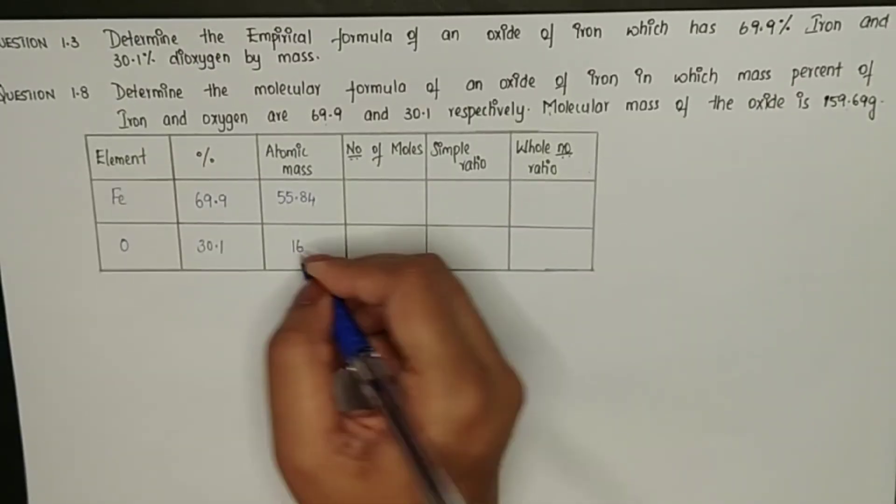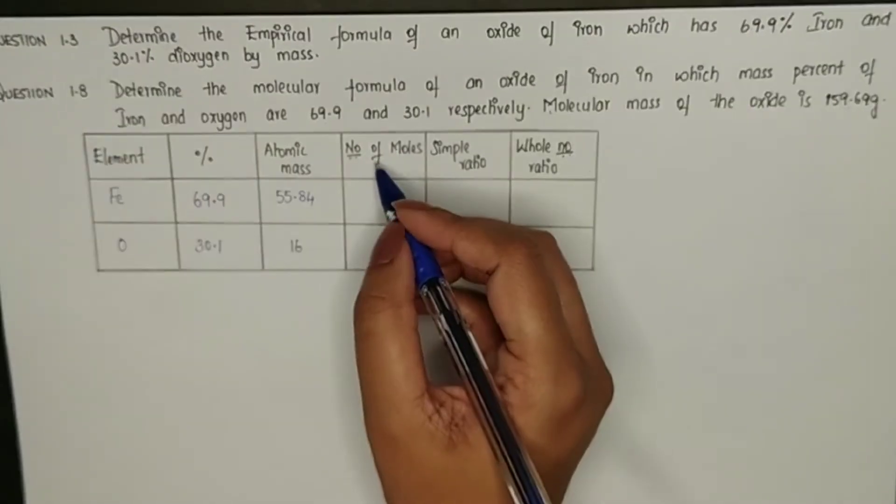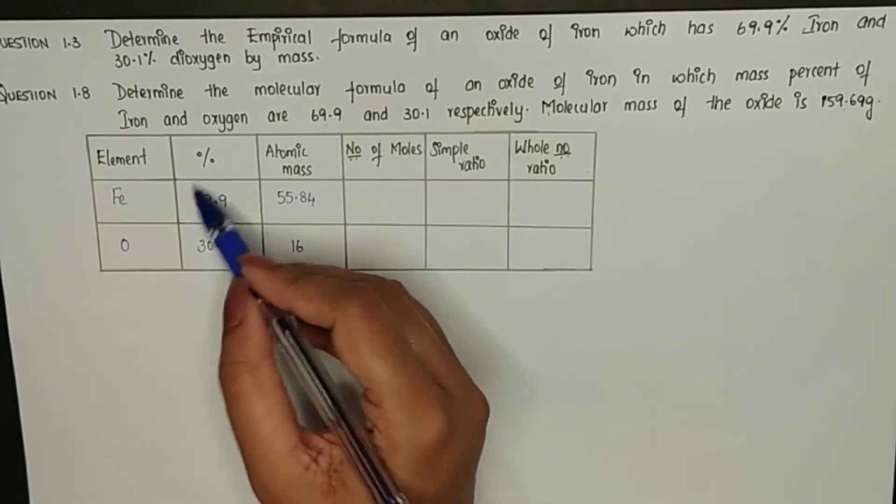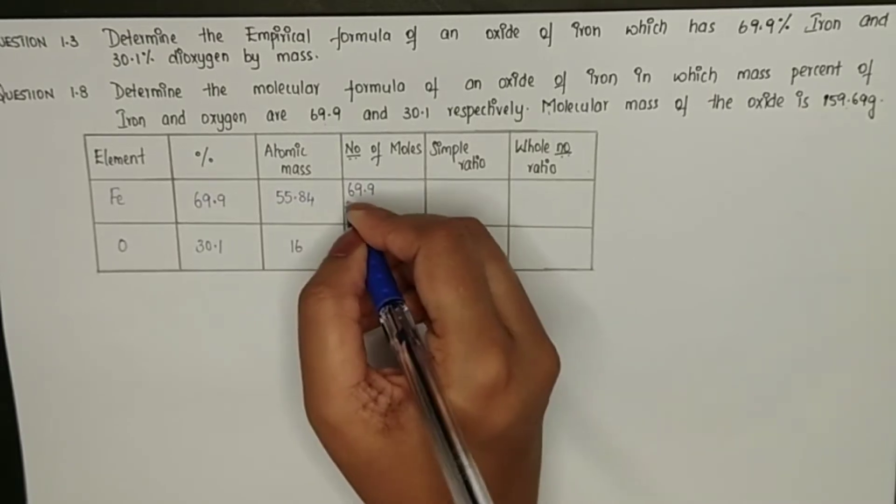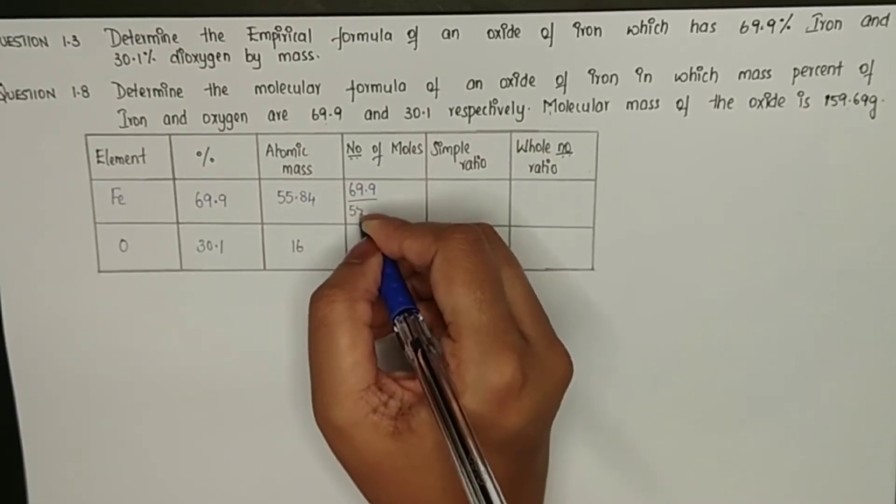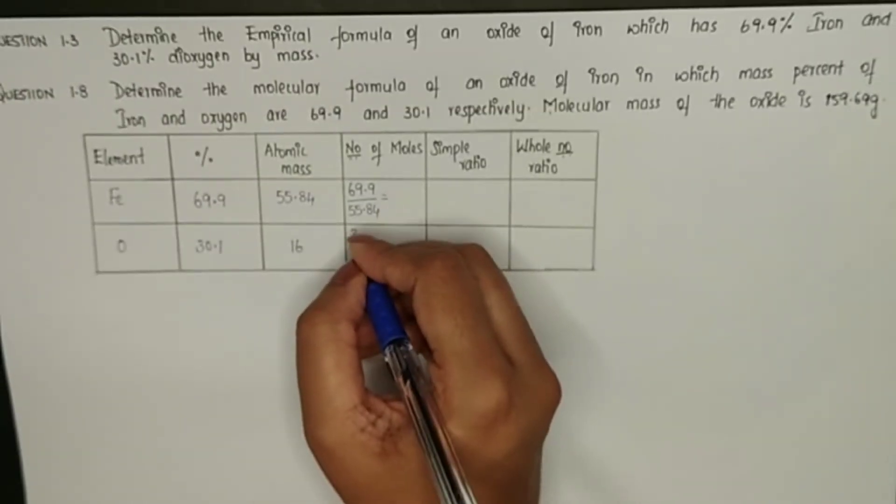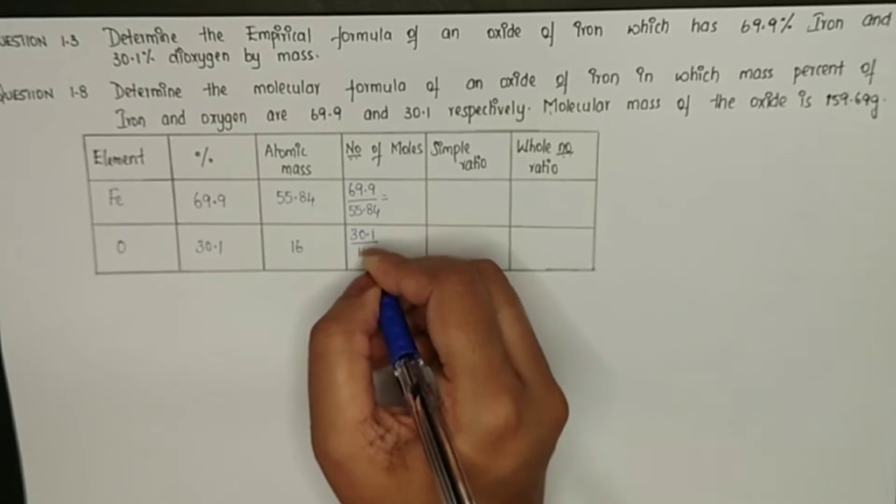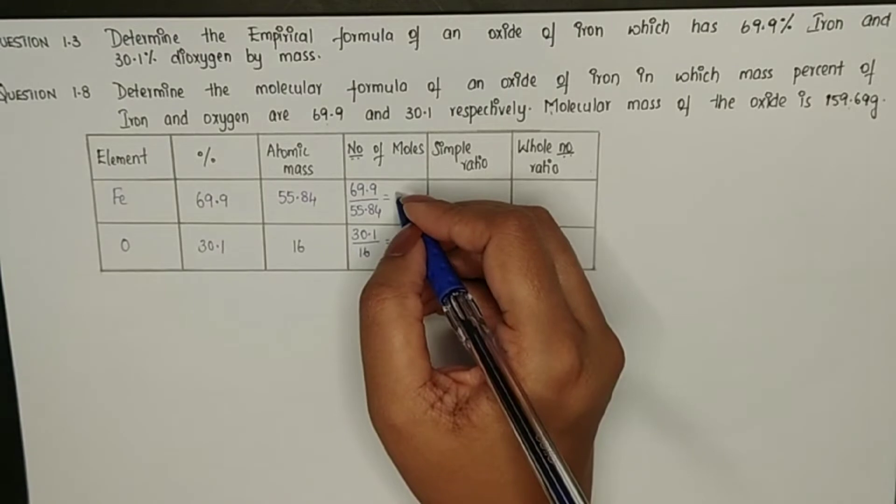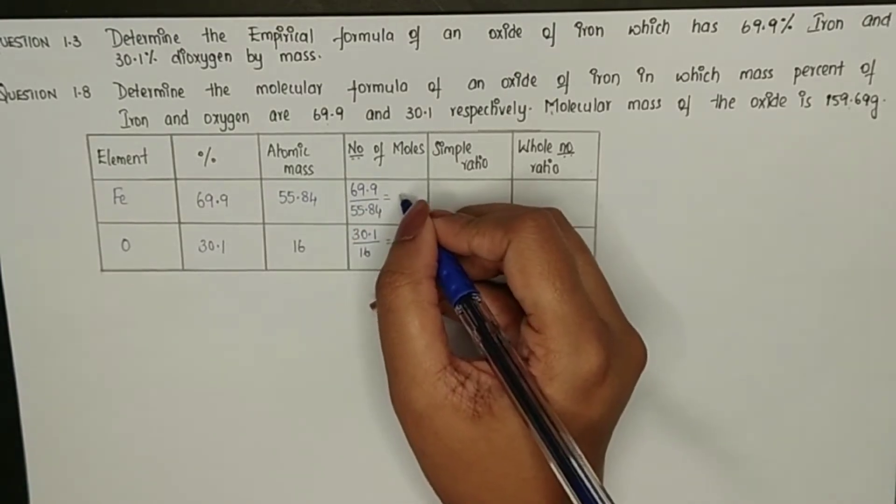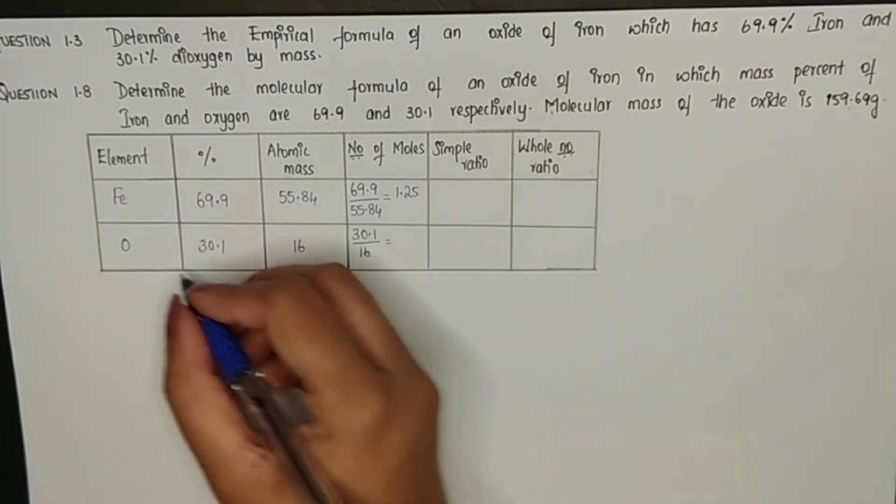Now we need to find the number of moles. We are going to divide the given percentage by atomic mass. So here 69.9 divided by 55.84. Similarly for oxygen, 30.1 divided by 16. For iron we are getting 1.25 as the moles and for oxygen we are getting 1.88.